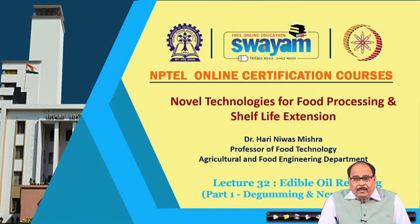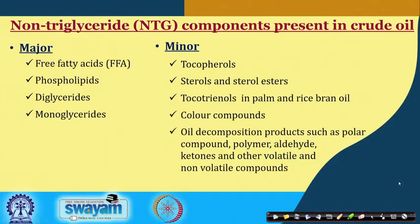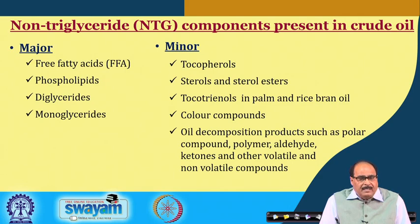Hello friends. In the earlier classes we studied about the chemistry of fats and oils and also how these oils can be recovered or extracted from oil-bearing materials like oil seeds. Depending upon the method used for extraction of oil and the process parameters, along with the triglycerides some other components also get extracted, and they may include free fatty acids.